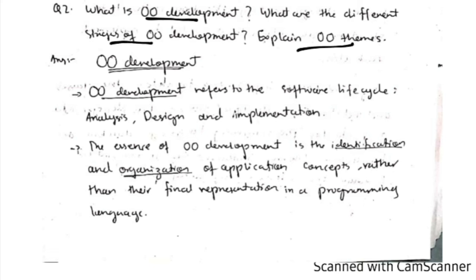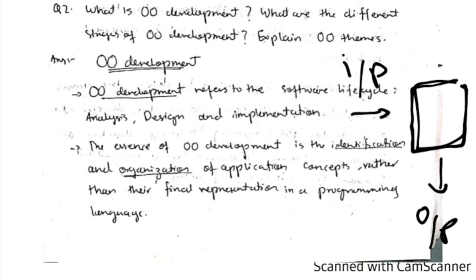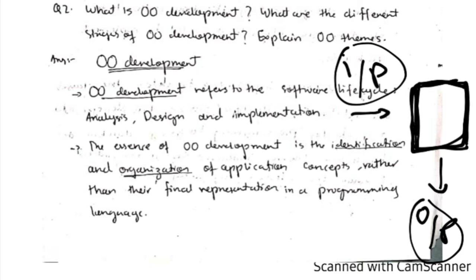Object-oriented development means you define the inputs and expected outputs without focusing more on how to implement them. This allows you to think more effectively about the application rather than investing energy on implementation details — that comes at a later stage.